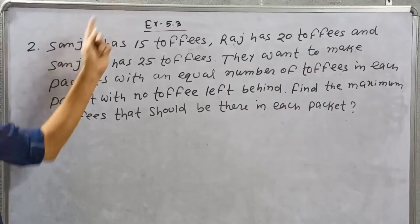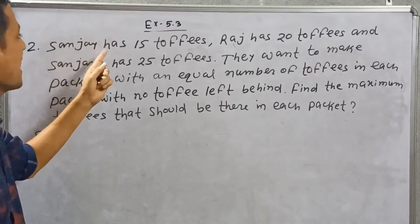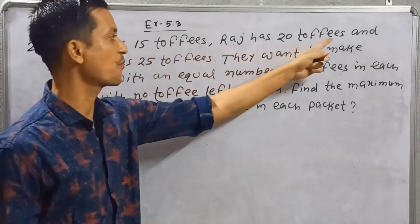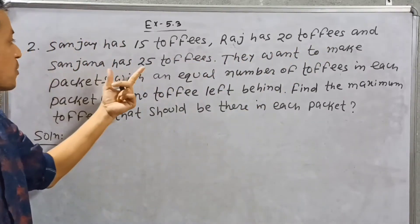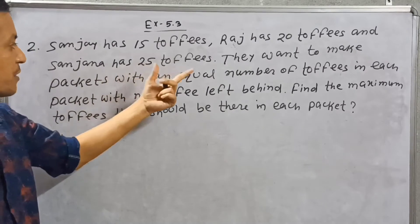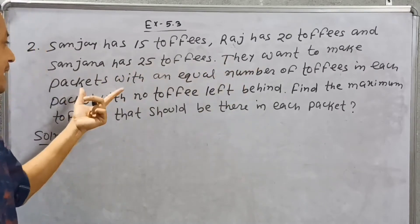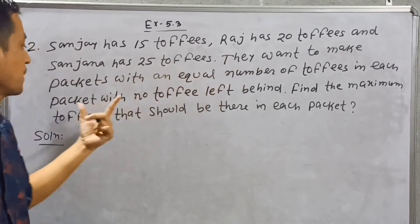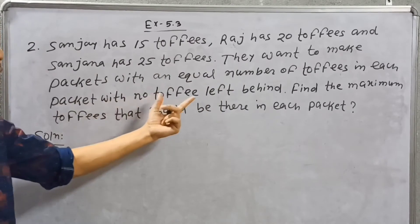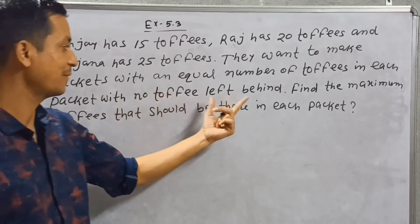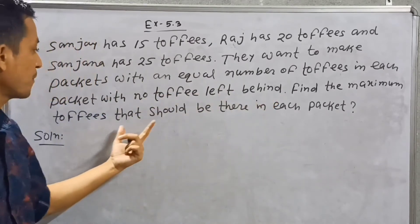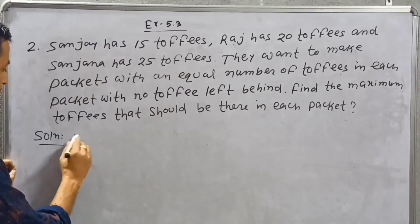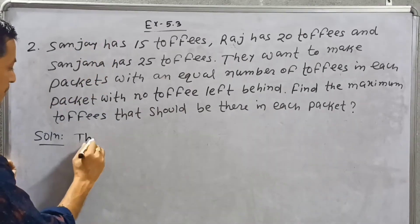Now question number 2. Sanjay has 15 toffees, Raj has 20 toffees, and Chandana has 25 toffees. They want to make packets with an equal number of toffees in each packet with no toffees left behind.